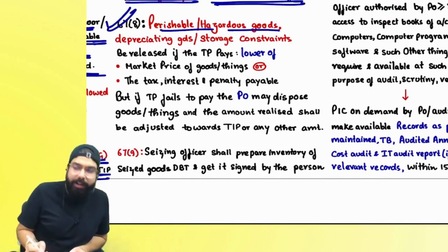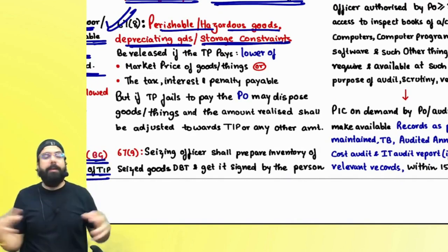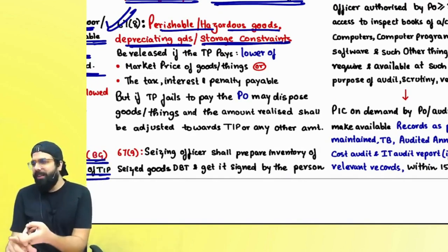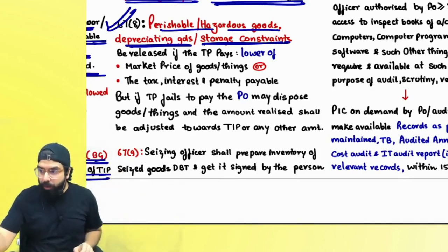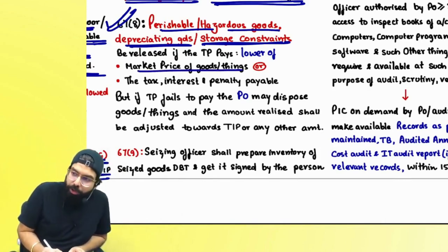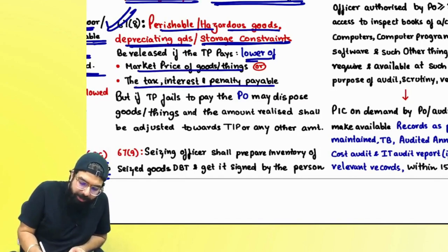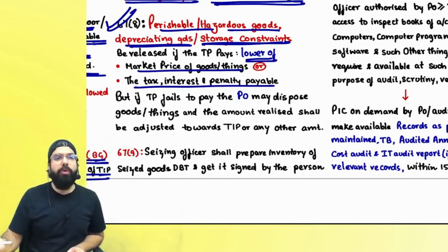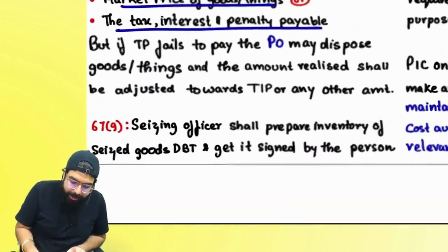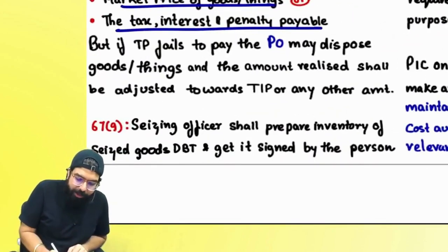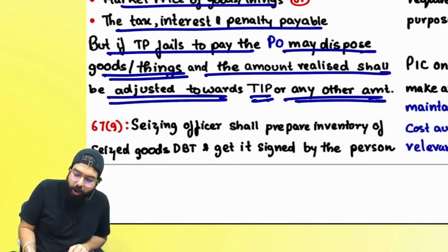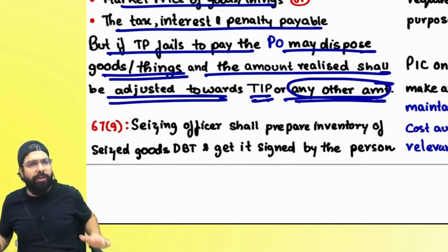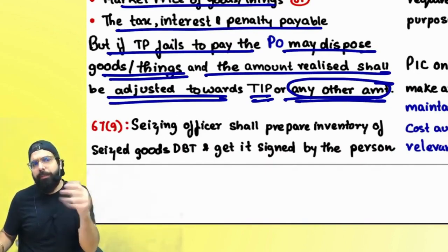Section 67(8) covers perishable or hazardous goods, or goods which are depreciating or have storage constraints. The department officer will say these goods will be sold off. If you want, you can pay the lower of the market price of the goods or the tax, interest, and penalty — whichever is lower — and the goods will be released. If the taxable person does not pay, the goods will be disposed of and the amount realized shall be adjusted towards tax, interest, penalty, transportation charges, storage charges, etc.